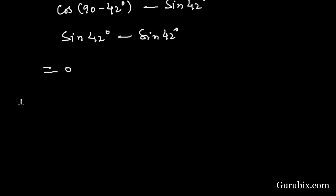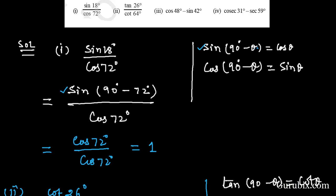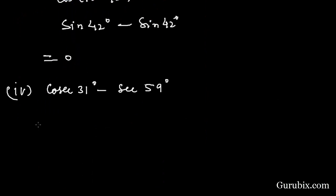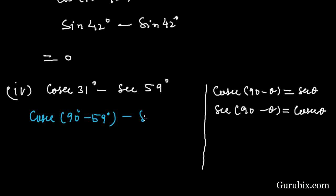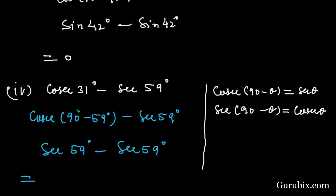Now we move to the fourth part: cosec 31 degree minus sec 59 degree. We apply the formula: cosec (90 minus theta) equals sec theta, or sec (90 minus theta) equals cosec theta. We write cosec 31 degree as cosec (90 minus 59 degree), which equals sec 59 degree. So we have sec 59 degree minus sec 59 degree, which equals 0. This is the solution of part 4 and the whole question. Thank you.